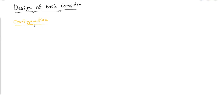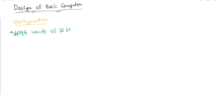At the beginning of this chapter we have seen that a basic computer consists of RAM and CPU. After learning all the concepts, we can say the basic computer has a memory of 4096 words of 16 bits each. We have a total of nine registers.